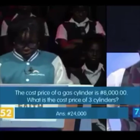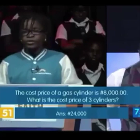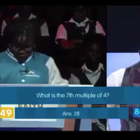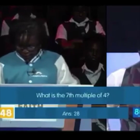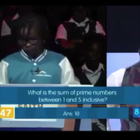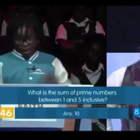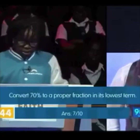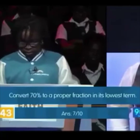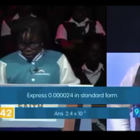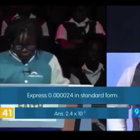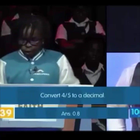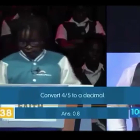The cost price of a gas cylinder is eight thousand, four thousand. Correct. What is seven twenty eight? Correct. What is the sum of the prime numbers between one and five? Ten. Correct. Convert seventy percent — seven over ten. Correct. Express zero point zero zero two, point four times six by minus five. Correct. Convert four point eight. Correct.